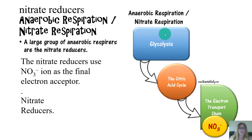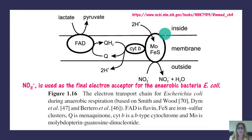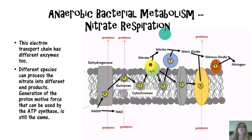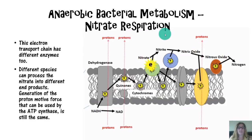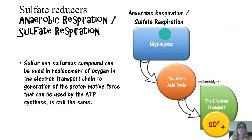This is the electron transport chain for E. coli during anaerobic respiration. The anaerobic bacterial metabolism of nitrate respiration has different enzymes than the electron transport chain seen in aerobic respiration. Different species can process nitrate into different end products. The generation of the proton motive force used by ATP synthase is still the same — the general concept always remains the same.